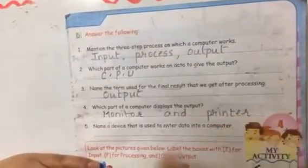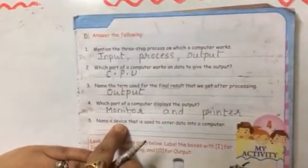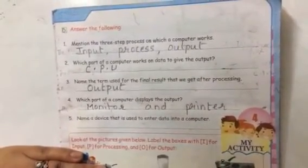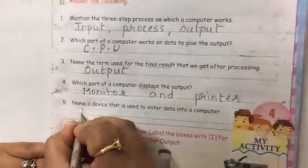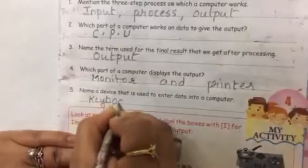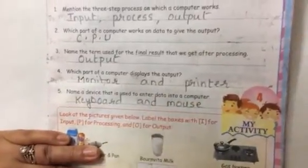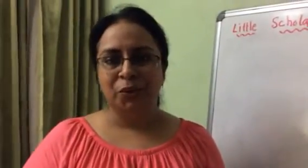Last question: 'Name a device that is used to enter data into a computer.' What do we use to enter data into the computer? Very good — keyboard and mouse. So these are two input devices. Alright, do this work neatly in your book. We have finished this chapter. Watch the video, all question answers are solved. Finish your work and send it. Okay, bye!